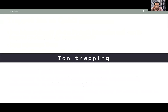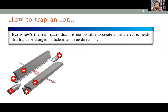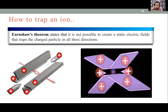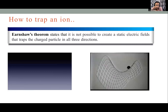Now, how do we trap an ion? An ion is a positively charged atom. If we apply a field from every direction we can trap it. But Earnshaw's theorem says it is not possible to create a static electric field that traps a charged particle in all three directions simultaneously. So how do we trap ions?